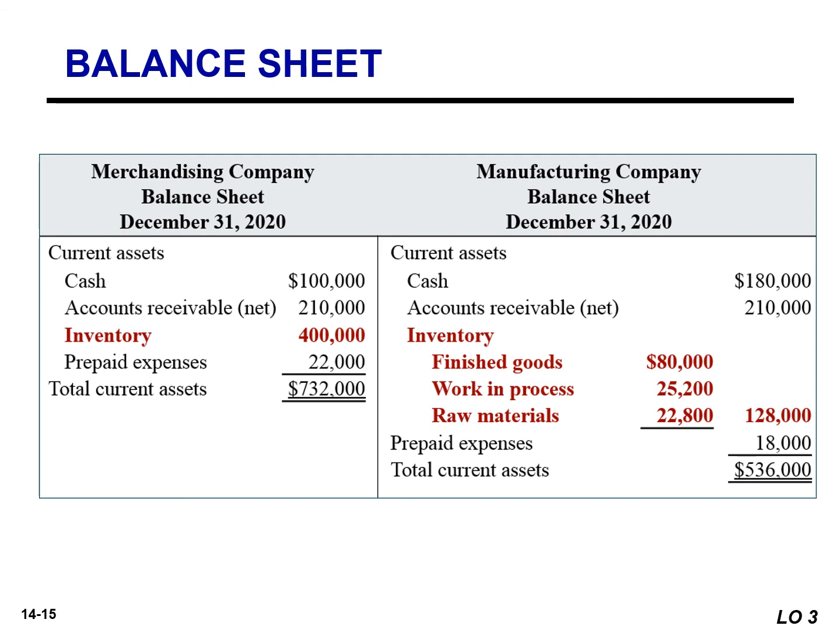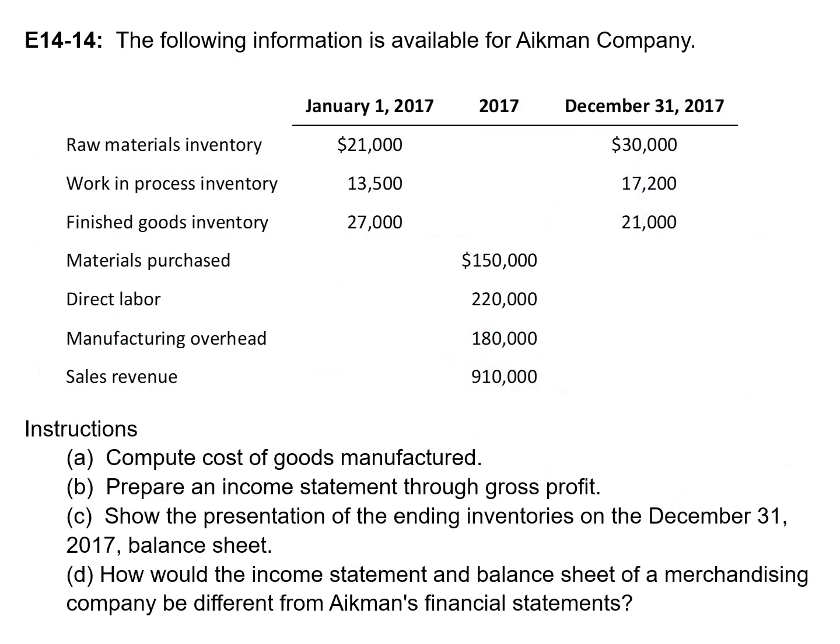This is a great exercise that summarizes everything we've talked about in this learning objective. You will need to calculate the cost of goods manufactured, prepare a partial income statement through gross profit, and also show how we would present our ending inventories on our balance sheet. The solutions to this exercise will be provided in the next video.